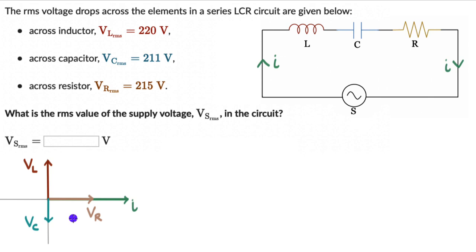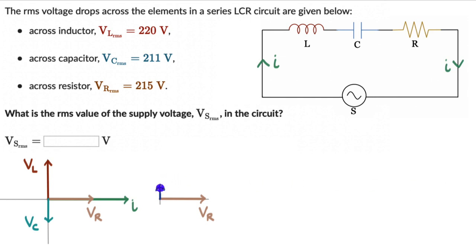Now let's find the vector sum of these three vectors to find the peak value of the supply voltage. V_L and V_C are in opposite directions, so we can combine them as V_L minus V_C, since V_L is greater than V_C here. The resultant of those two points upward. Now we have a right-angle triangle, so we can use the Pythagoras theorem to find the resultant supply voltage.